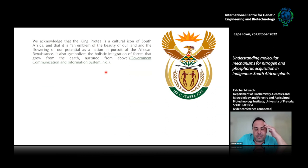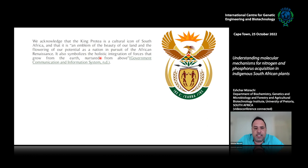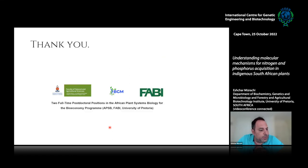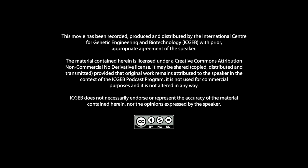I want to finish off by acknowledging that we put in our paper that the King Protea is a cultural icon of South Africa. It's in our emblem — an emblem of our beauty and the flowering of our potential as a nation in pursuit of the African Renaissance. It symbolizes the holistic integration of forces that grow from the earth nurtured from above. We dedicated the completion of this genome to all past, present, and future researchers working on, as well as people benefiting from, South African biodiversity. Thank you very much for listening. We are advertising for postdocs, and if you're happy, Laura, I can spread that through your networks.